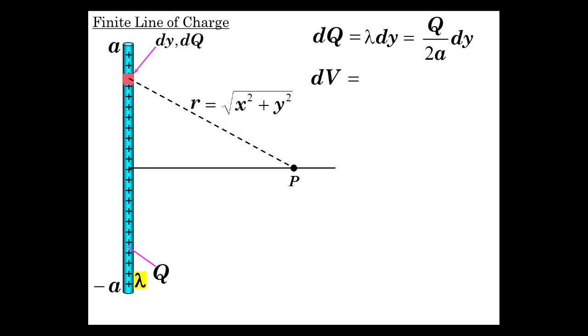Now differential voltage dV is k dq over r from a point charge. So that's 1 over 4π epsilon_0 times 1 over r times dq. If we want V, we have to add up all those little dV's, so let's do it.